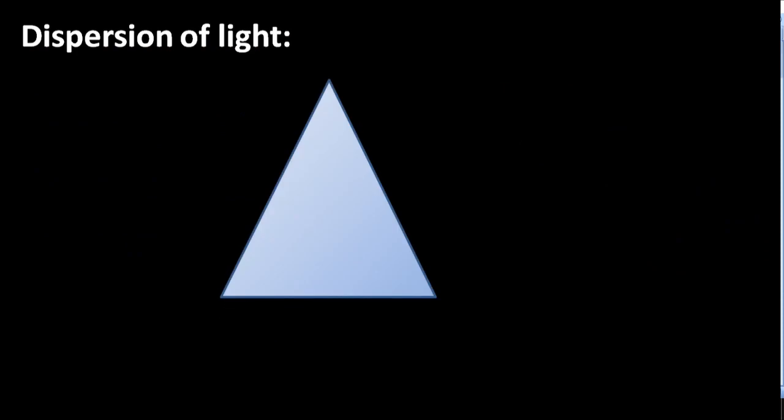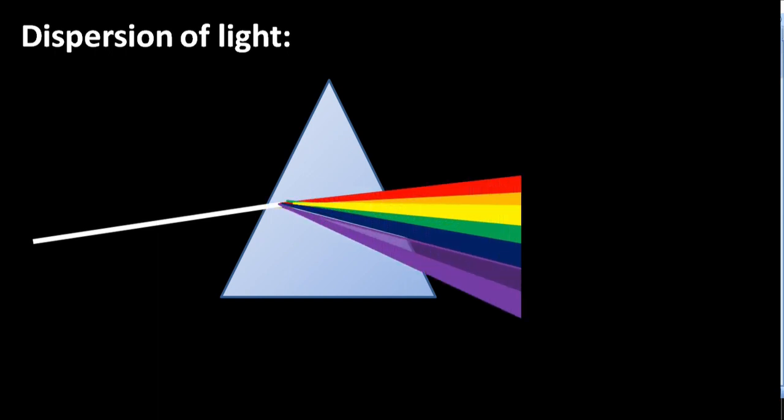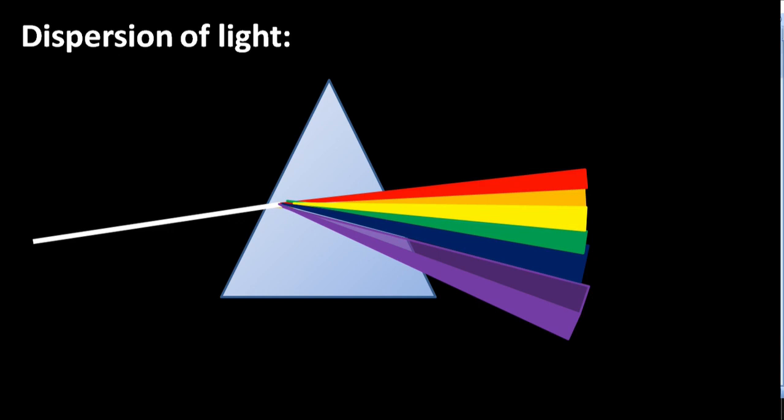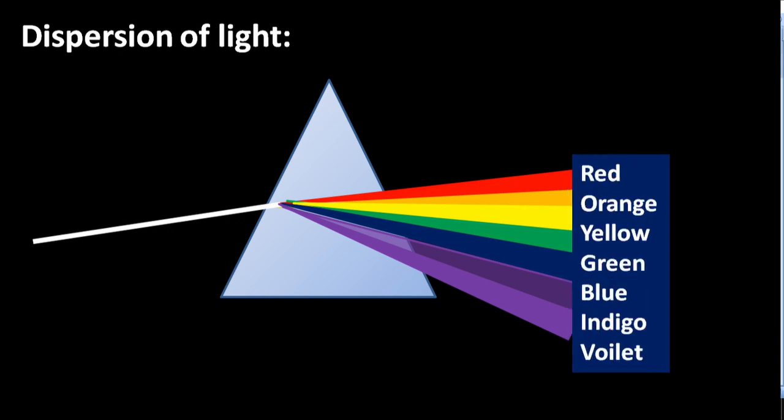The spectrum obtained through a glass prism. Violet color bends more and red color least. Red takes the top position whereas violet at bottom in colorful spectrum.